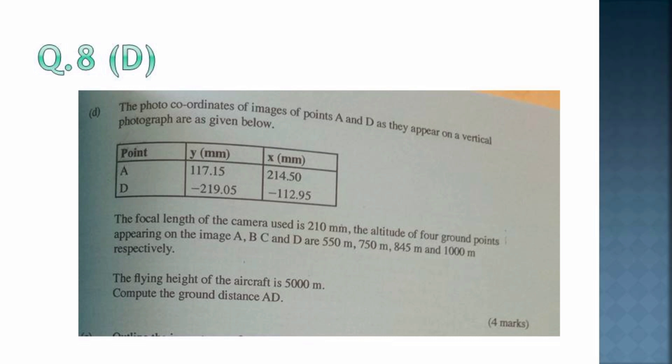We have a table with three columns and the first row: points under the Y-axis and the X-axis with measurements in millimeters of point A and D only. The focal length of the camera used is 210 millimeters. The altitude of four ground points appearing on the image A, B, C, and D are 550 millimeters, 750 millimeters, 845 millimeters, and 1000 millimeters. Those are meters actually.